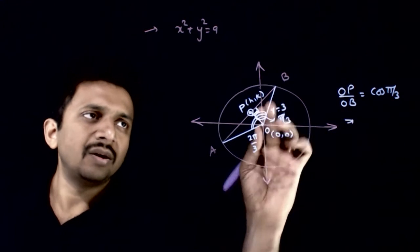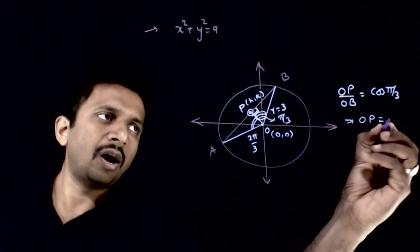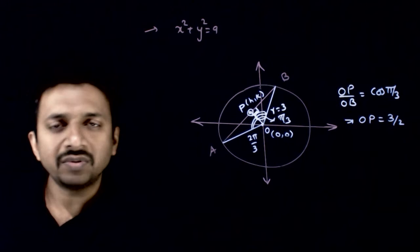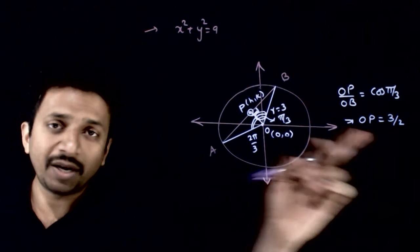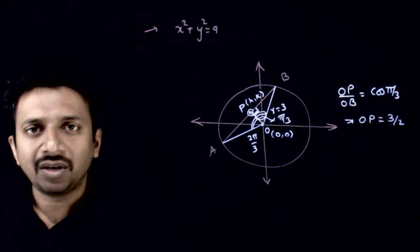This implies OP is always equal to 3 by 2 units, right? The distance of P from origin is always equal to 3 by 2.